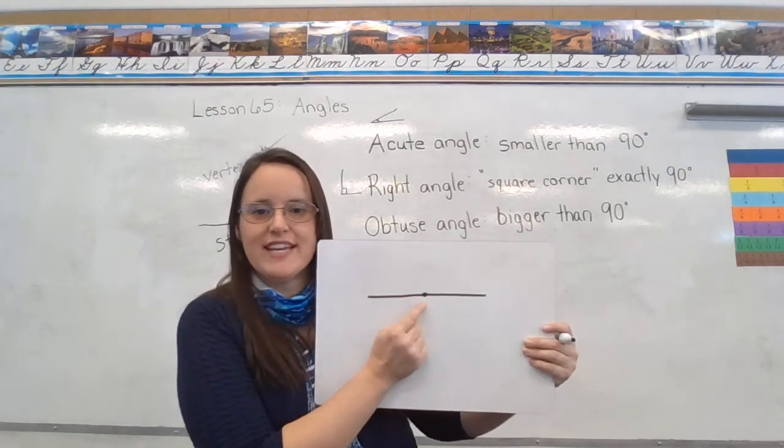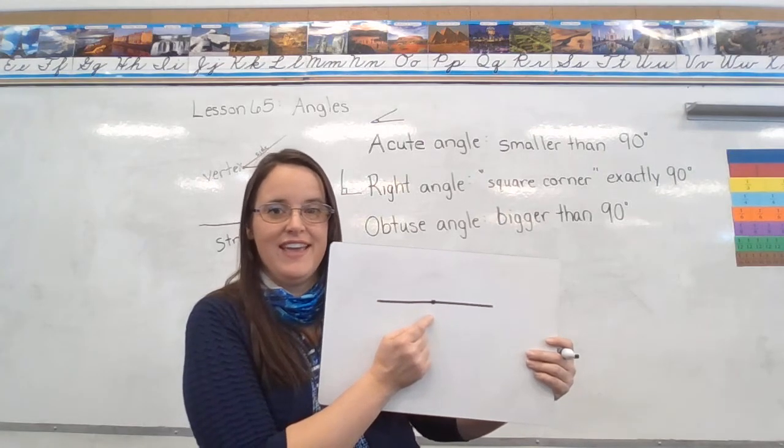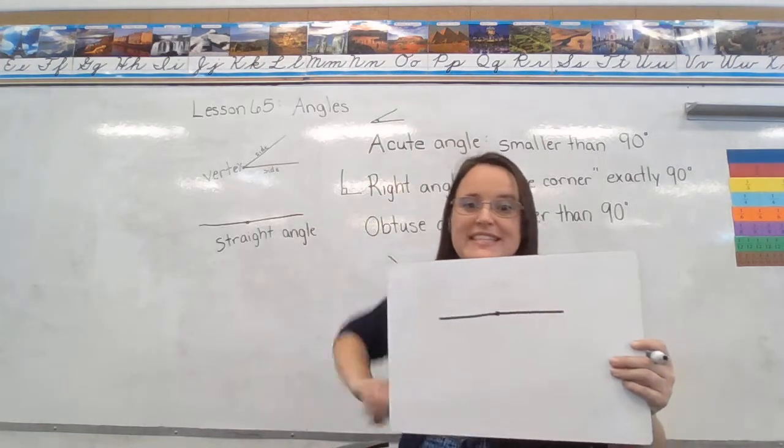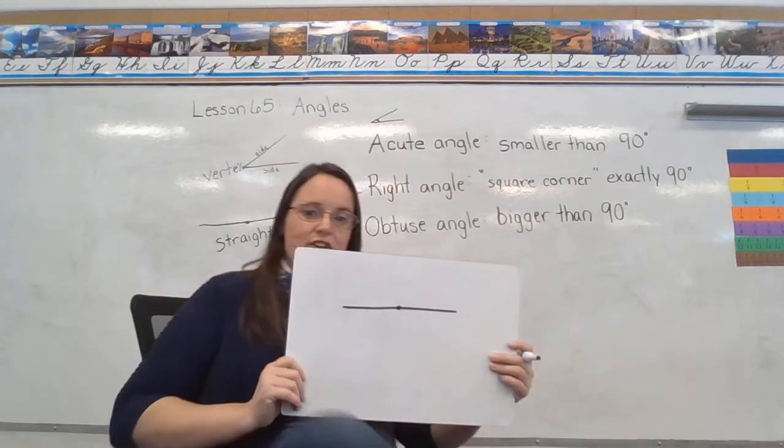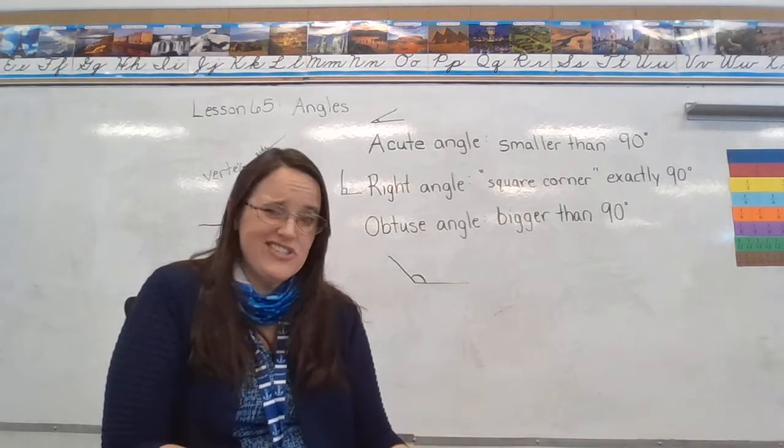I draw the vertex there to show you that this is meant to be an angle. And I think my head's covering it up on the board. But this is a straight angle. Goes straight across. Doesn't even look like an angle at all. It just looks like a line.